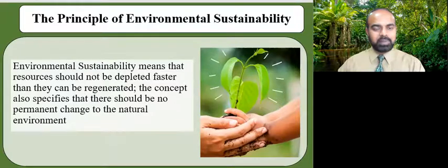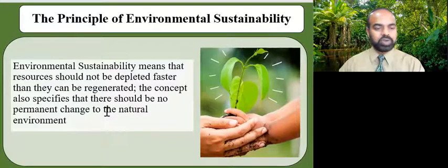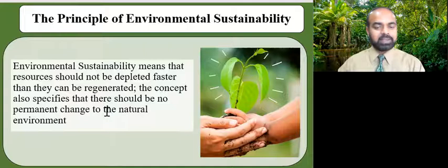The third guiding principle of environmental policy-making is the principle of environmental sustainability. Environmental sustainability means that resources should not be depleted faster than they can be regenerated. The concept also specifies that there should be no permanent change to the natural environment. An environmentally sustainable lifestyle is the adoption of a lifestyle that minimizes demands upon the environment — an example is lowering one's carbon footprint through energy conservation measures.